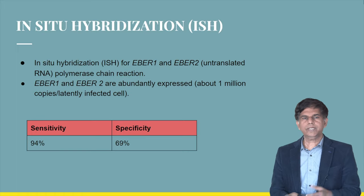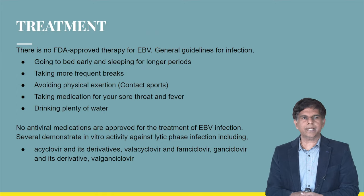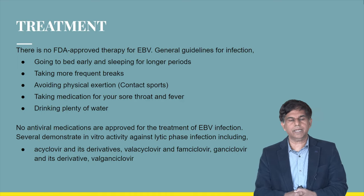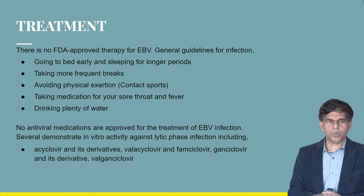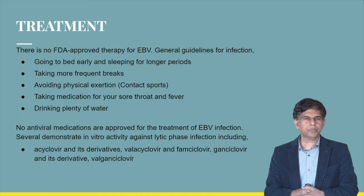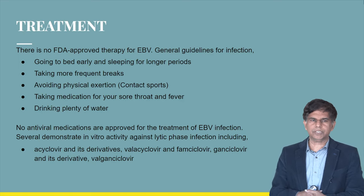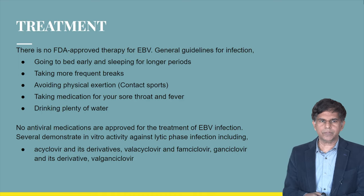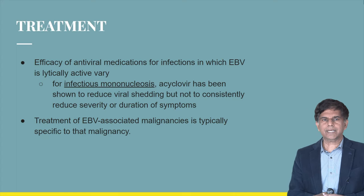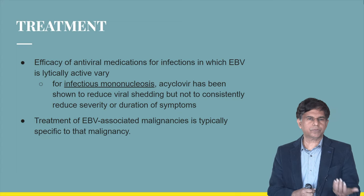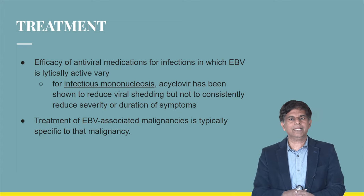In-situ hybridization (ISH) has a high sensitivity of 94% but lower specificity of 69%. Treatment is mainly supportive therapy: bed rest, longer sleep periods, taking more frequent breaks, avoiding physical exertion and contact sports, taking medication for sore throat and fever, and drinking plenty of water. Currently, no antiviral treatments are approved for EBV infection. Several agents demonstrate in vitro activity, including acyclovir, valacyclovir, famciclovir, ganciclovir, and valganciclovir. Acyclovir has been shown to reduce viral shedding but not consistently reduce the severity or duration of symptoms.